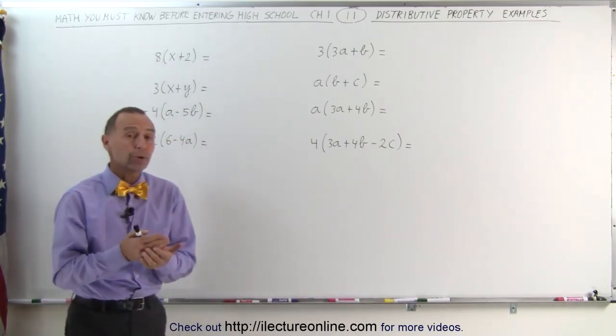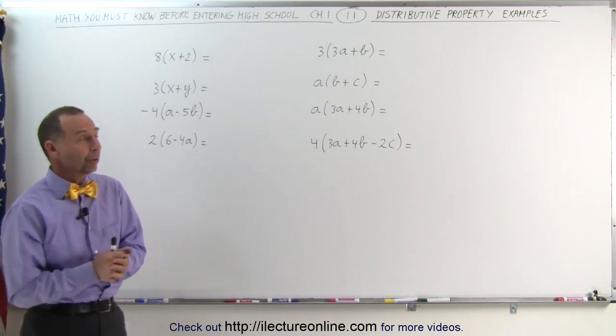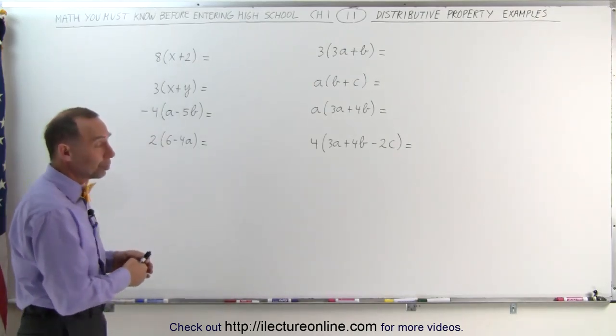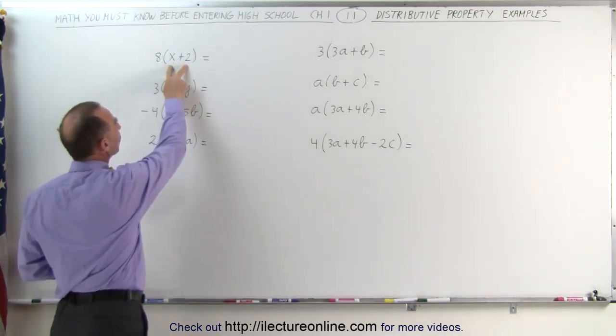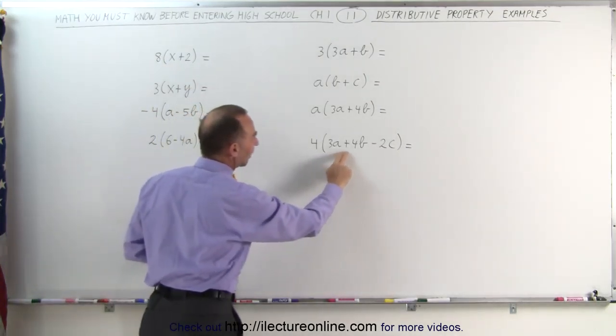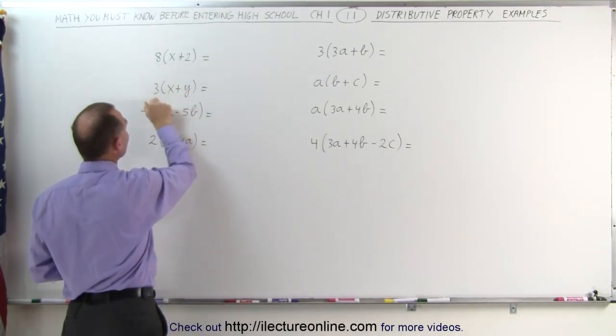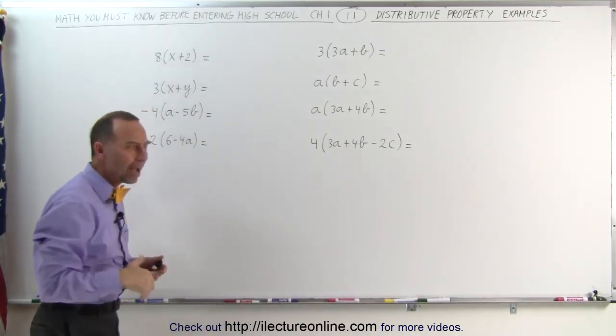When we're multiplying a number or a variable representing a number, and we multiply that times a binomial or a trinomial, a binomial is something that has two terms, a trinomial is something that has three terms. So here we're multiplying eight times this binomial, three times this binomial, and so forth. How do we do that?